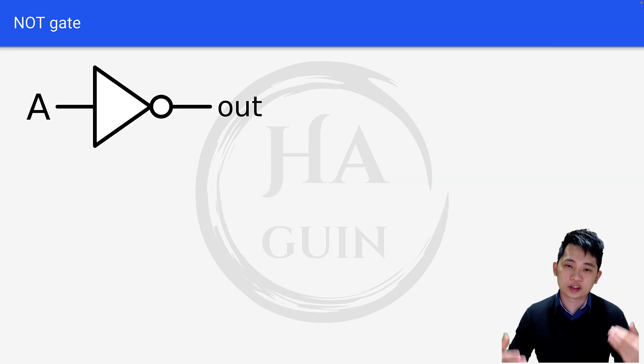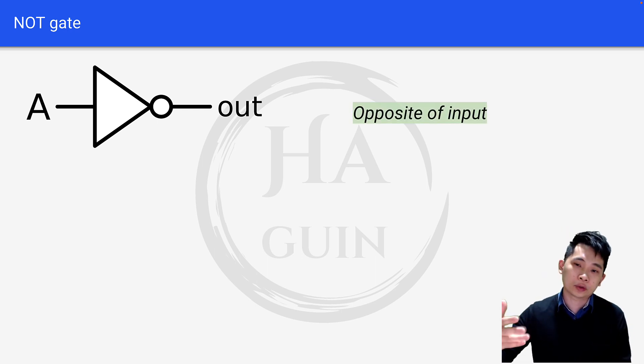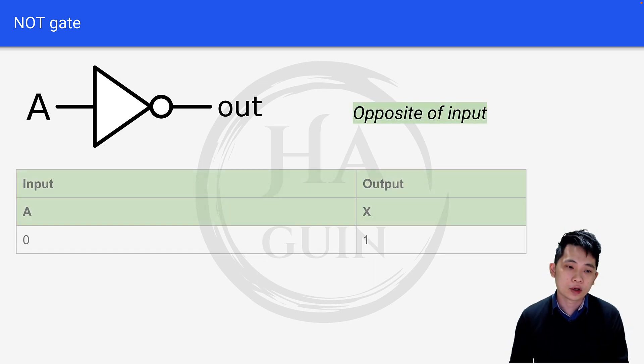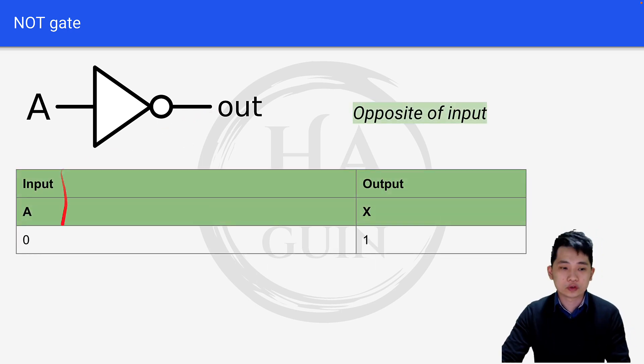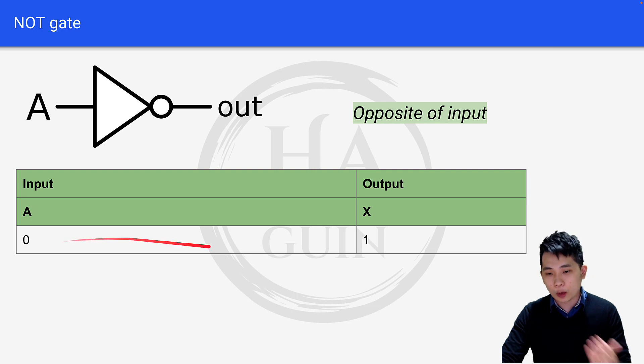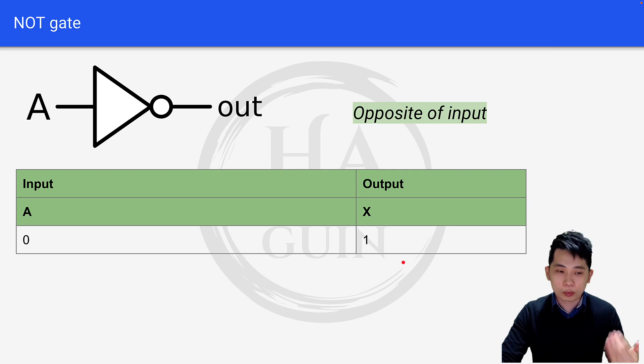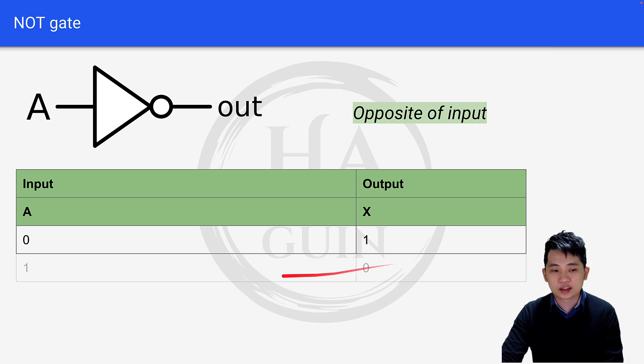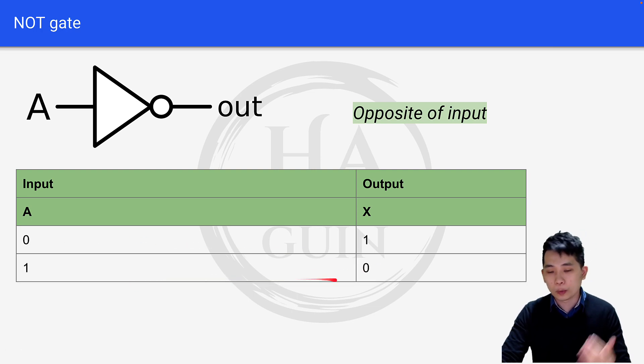For NOT gate, it's quite simple. The output is just the opposite of the input. Let's look at the table. If we have 0 as input, the output would be 1, since it's the opposite. And if we have 1 as input, the output would be 0, which is the opposite.